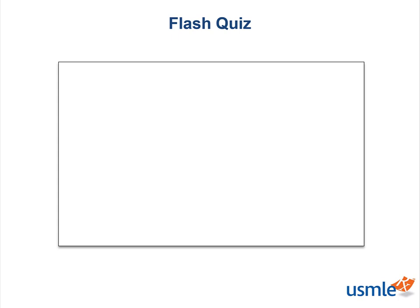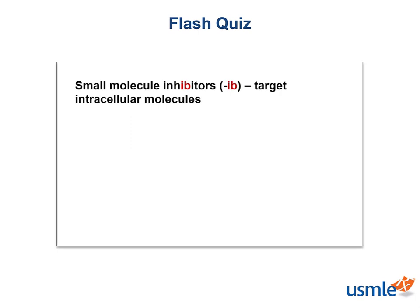Flash quiz: What type of biologic agent is celecoxib? Celecoxib ends in 'ib', so it's one of our small molecule inhibitors, which targets intracellular molecules. It inhibits cyclooxygenase-2, or COX-2.